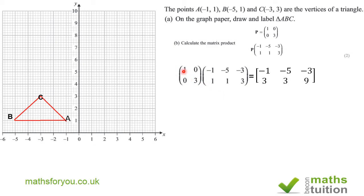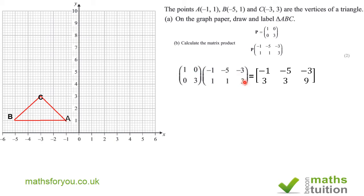Now I'll explain how I got this. For the x-values: 1×(-1) gives -1, and 0×1 gives 0, so -1+0 = -1. Similarly, 1×(-5) gives -5, plus 0 gives -5. Then 1×(-3) gives -3, and 0×(-3)+0 gives -3.